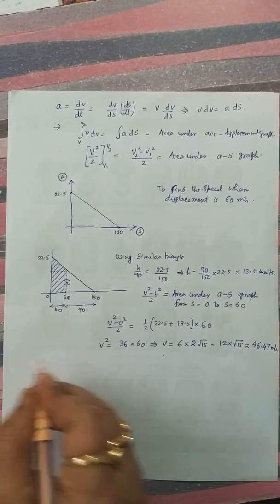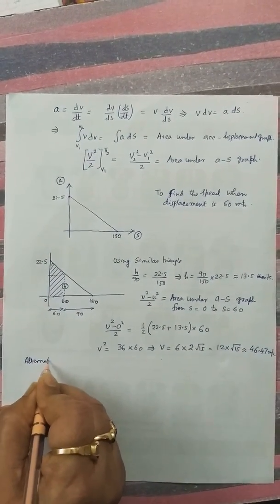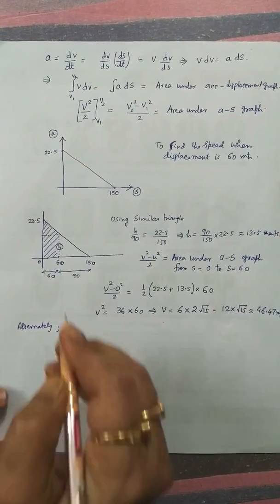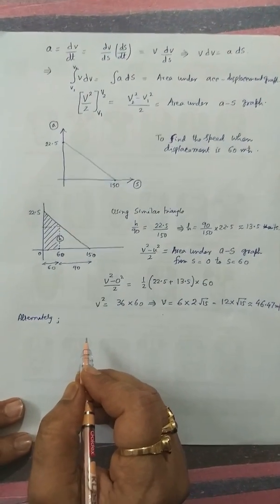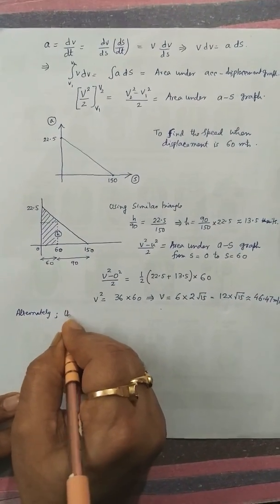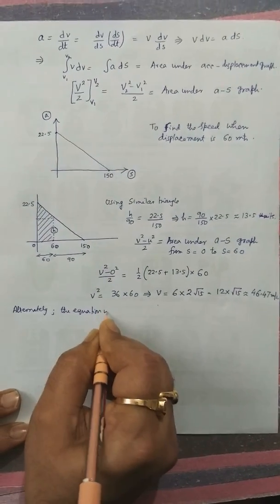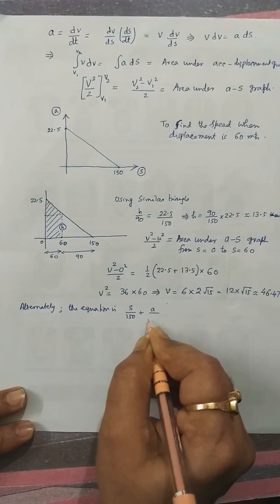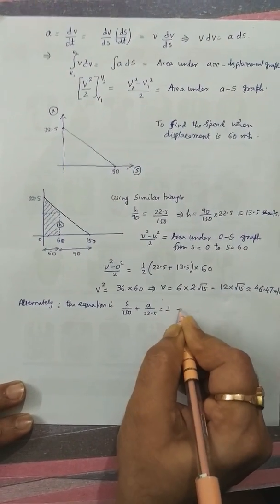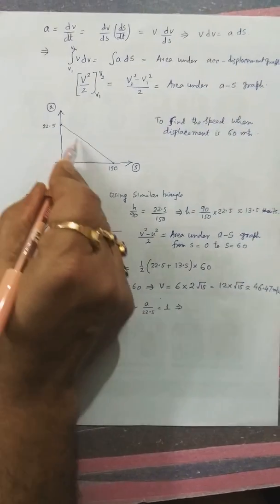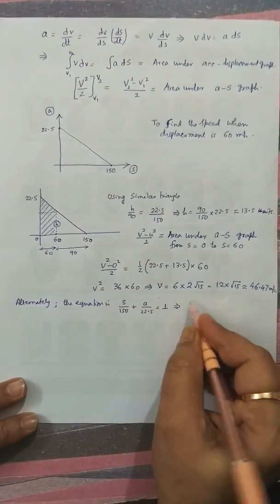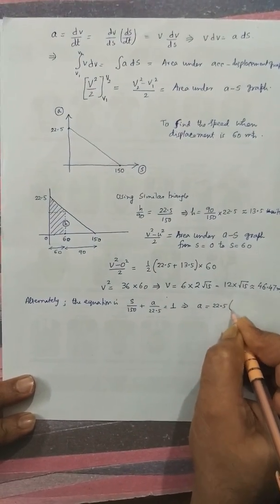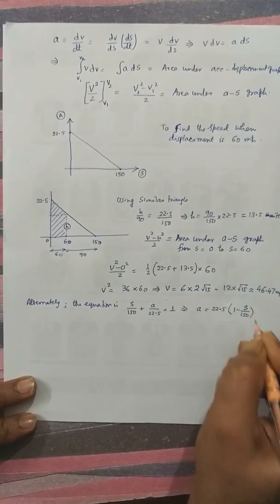In calculus method, alternately we have to find out the equation of acceleration versus displacement. The equation is s by 150 plus a by 22.5 equal to 1, the equation of the straight line in the intercept form. Arranging this we get a is equal to 22.5 into 1 minus s by 150.